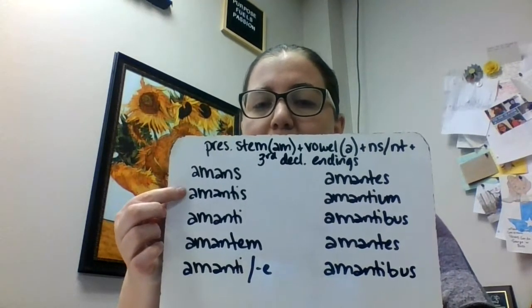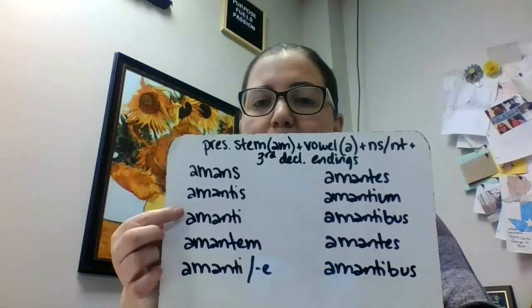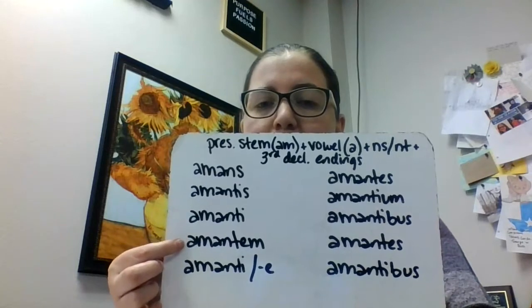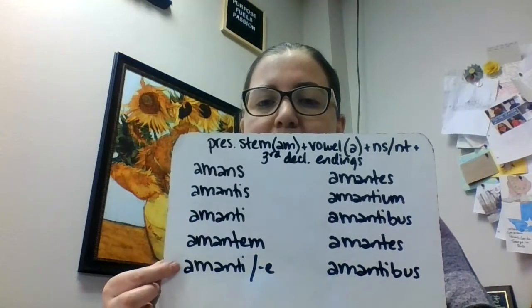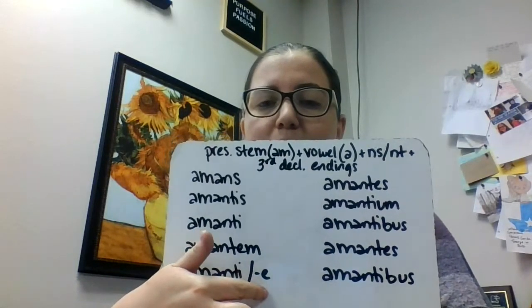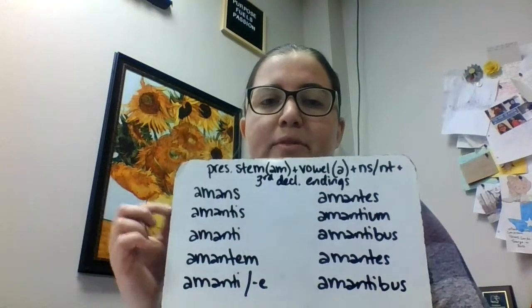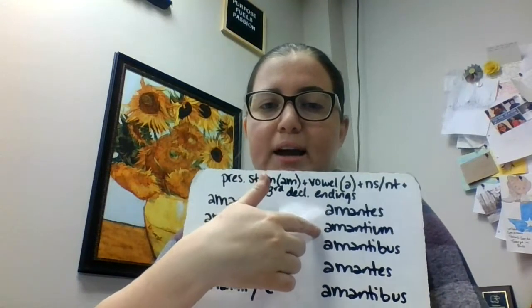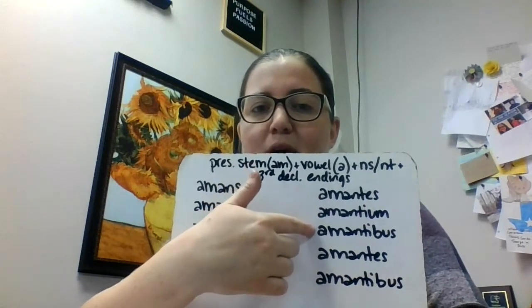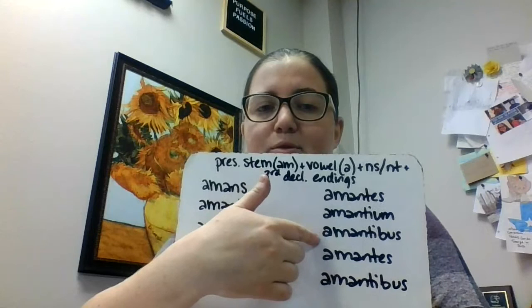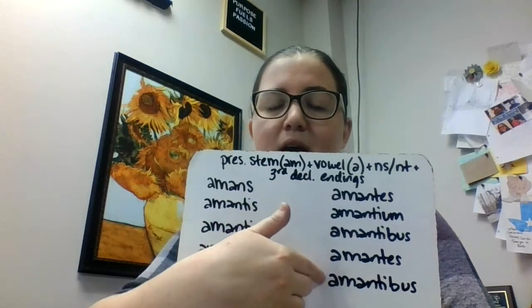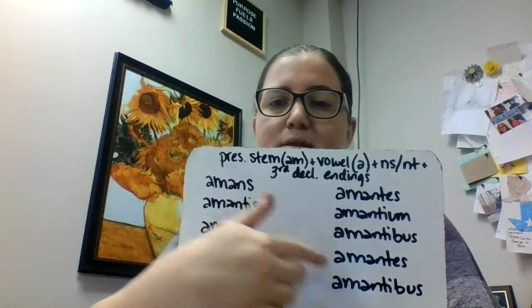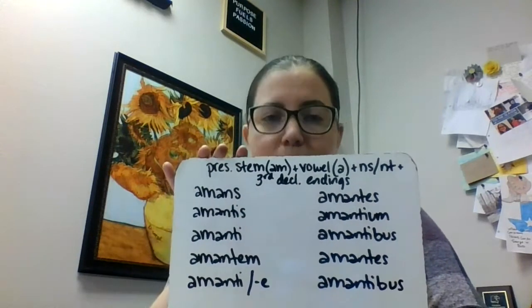So our chart should look like this: amans, amantis, amanti, amantem, amanti — or you could do the 'e' with amantae. Amantace — we need to remember our i-stems here — amantium, amantibus, amantes, amantibus. That's our first one for present active, using those third declension endings and that present stem.